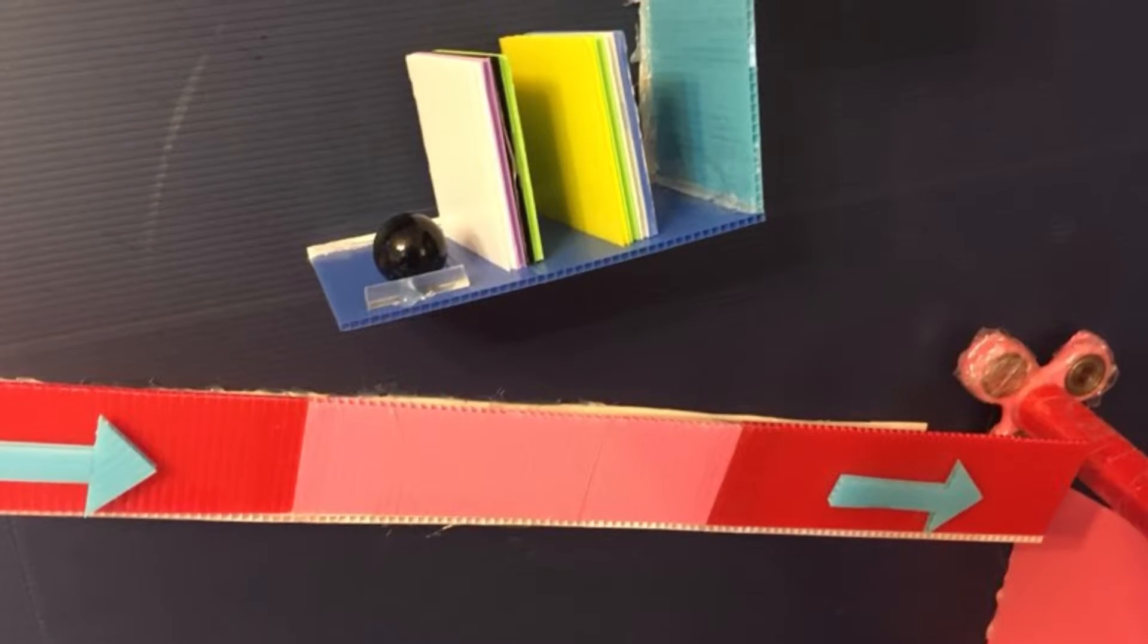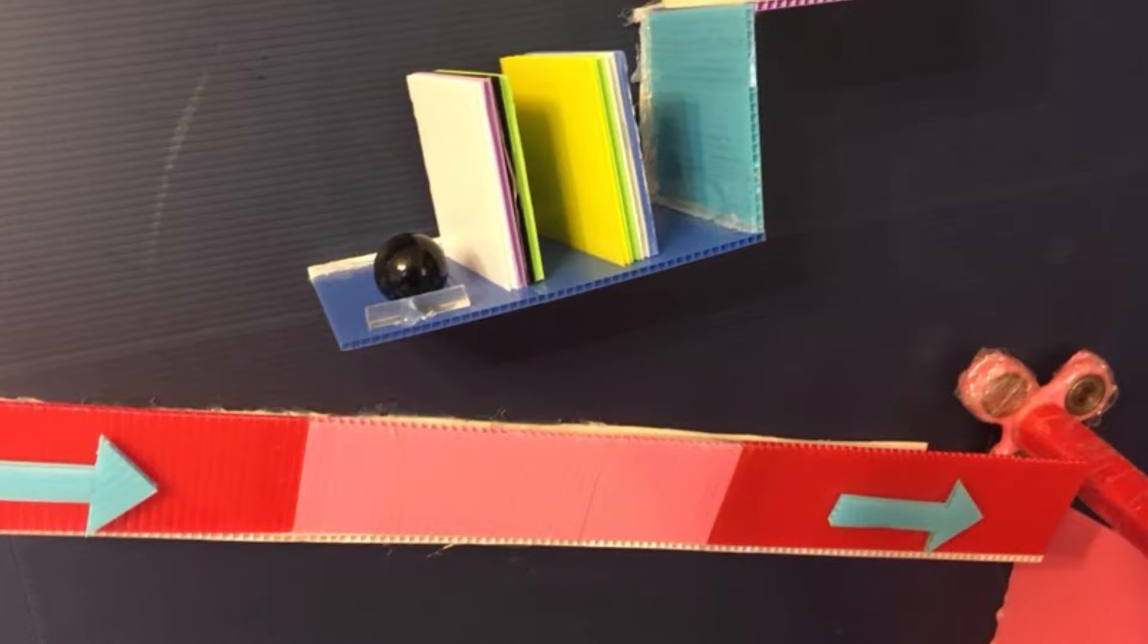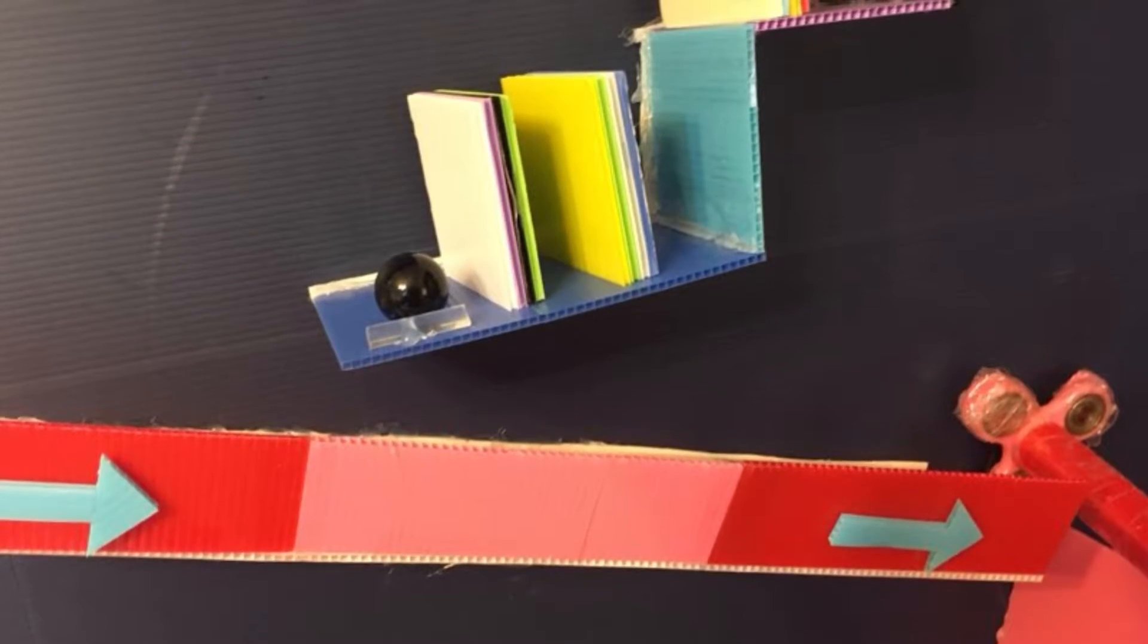So when the marble and the ball falls down the ramp, it changes its direction from 90 degrees to 180 degrees.